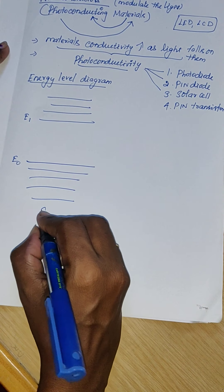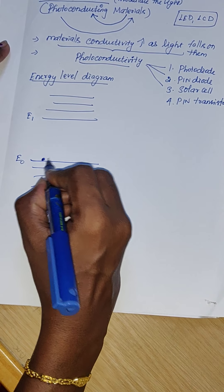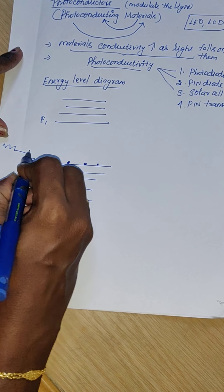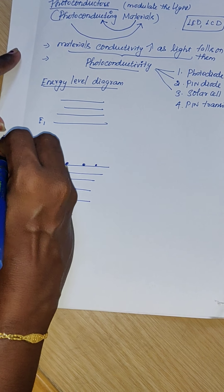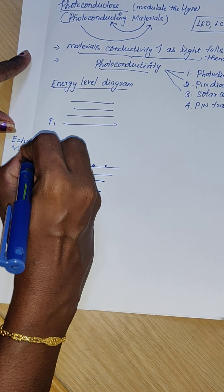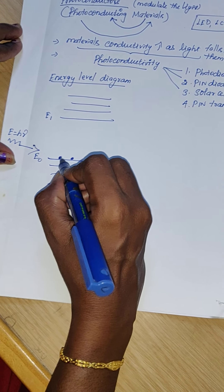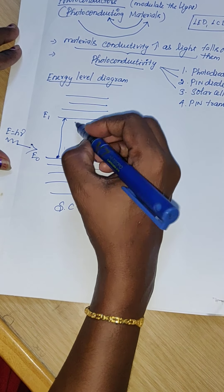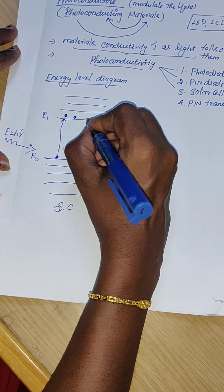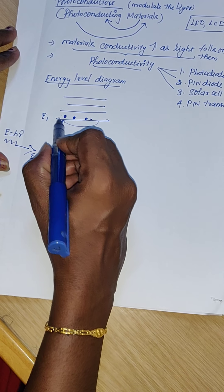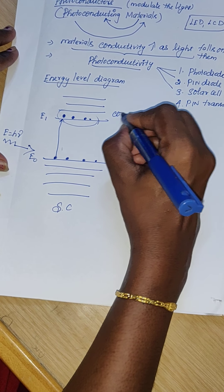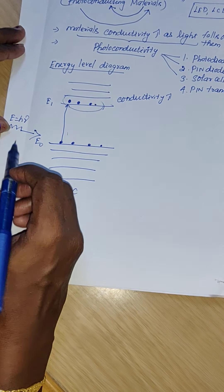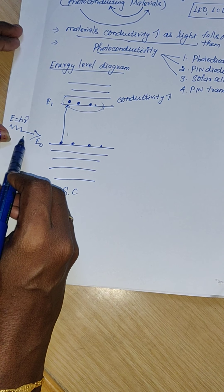The conductivity of the semiconducting material increases when light falls on it. The outermost electrons in the semiconductor, when struck by photons of sufficient energy h-nu, absorb that energy, get excited, and move to the higher energy level. As more electrons reach the conduction band, conductivity automatically increases.